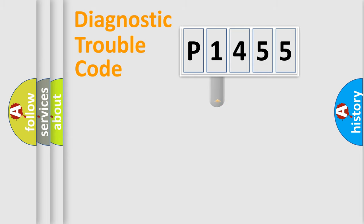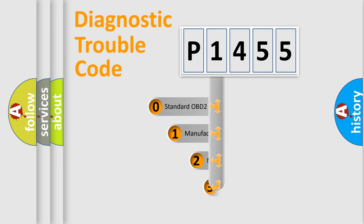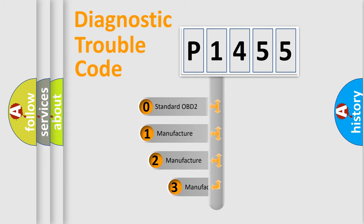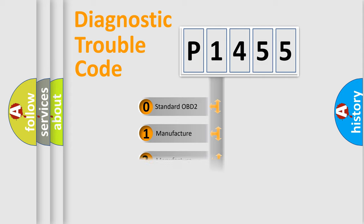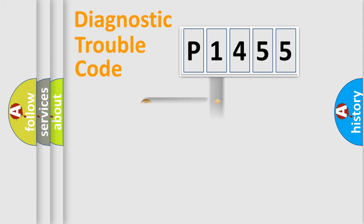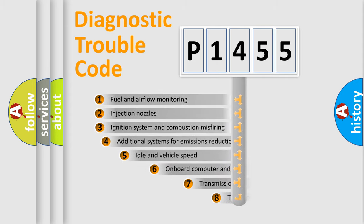This distribution is defined in the first character of the code. If the second character is expressed as zero, it is a standardized error. In the case of numbers 1, 2, or 3, it is a more specific expression of a car-specific error.